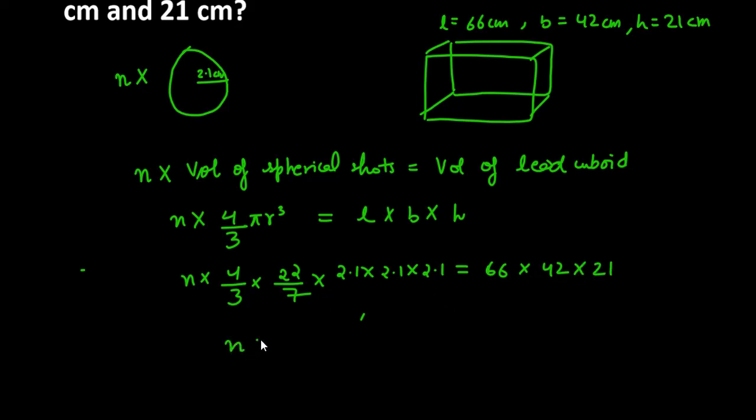Now what do we need to do? We need to use cross multiplication to find n value. So it will be 66 into 42 into 21 into 7 into 3, with 7 and 3 on top, and these numbers are 4, 22, and 2.1 three times in the denominator.